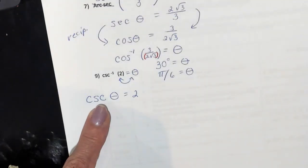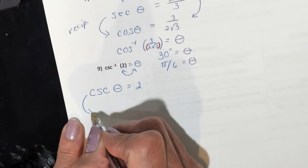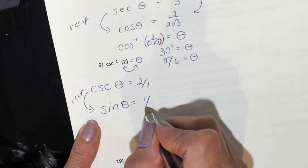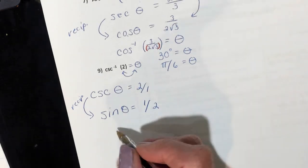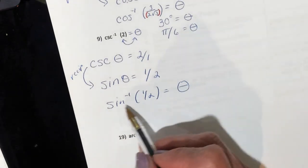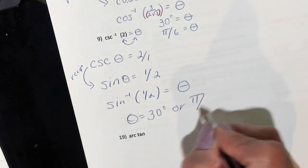Number 9: inverse cosecant of 2 equals theta. This means the cosecant of what equals 2. We don't have a cosecant button, so we take the reciprocal — the reciprocal of cosecant is sine, and the reciprocal of 2 over 1 is 1/2. So now we have inverse sine of 1/2, which gives us 30 degrees, or pi over 6 in radians.